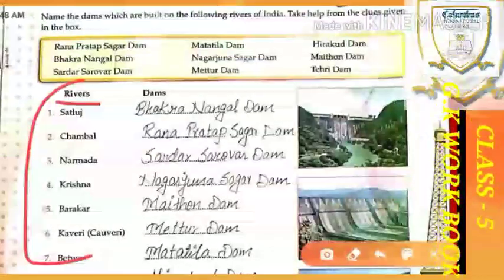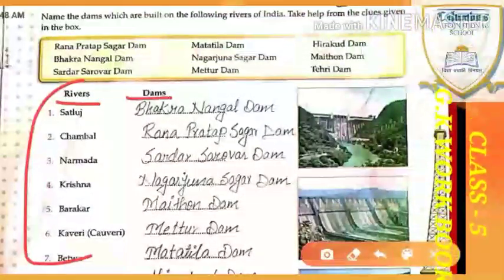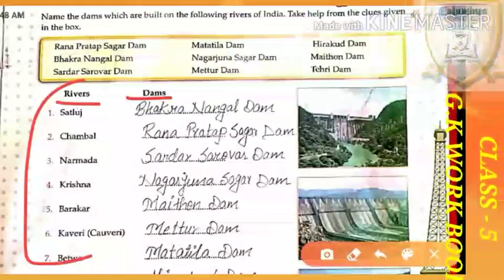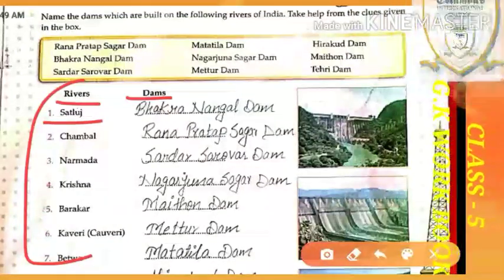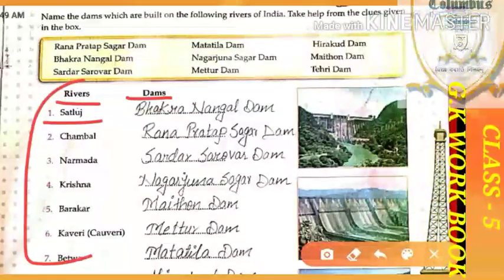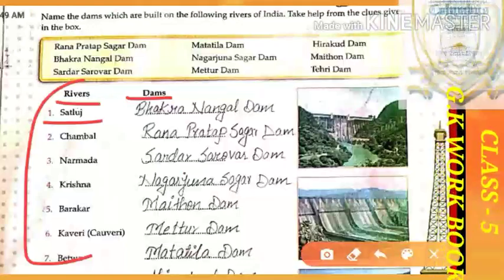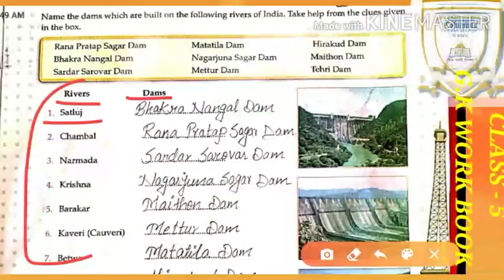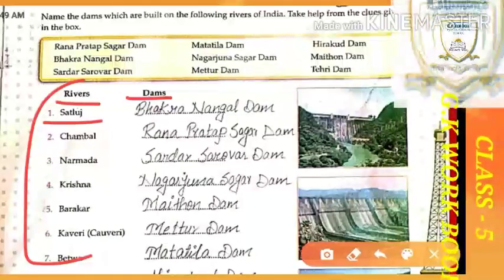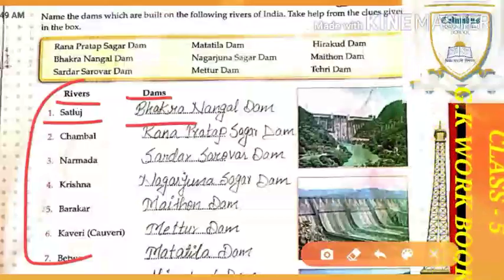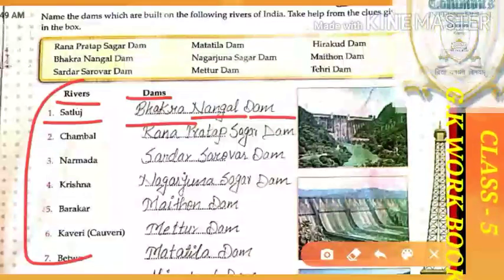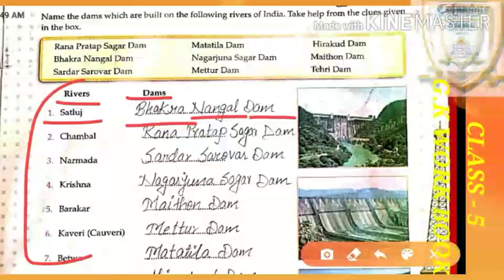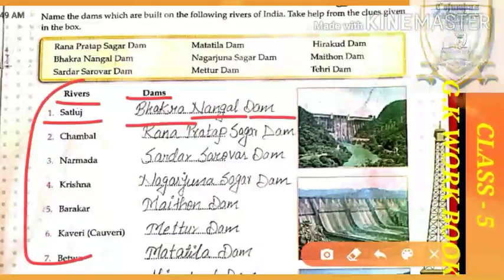Now let's start to complete this exercise. In the first column there are rivers and in the second column the dams of those rivers. The first river is Satluj — it's a river — and we have to write down the dam name that is built on the Satluj river.